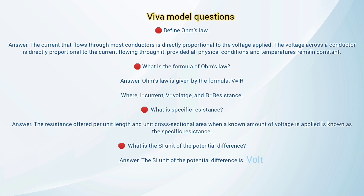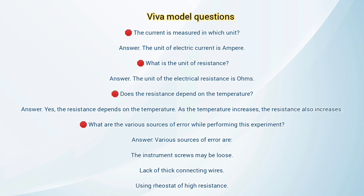What is specific resistance? The resistance offered per unit length and unit area of cross-section when a given voltage is applied is known as specific resistance. What is the sign of potential difference? The sign of potential difference is volt. In which unit is current measured? The unit of electric current is ampere. What is the unit of resistance? The unit of resistance is ohm.